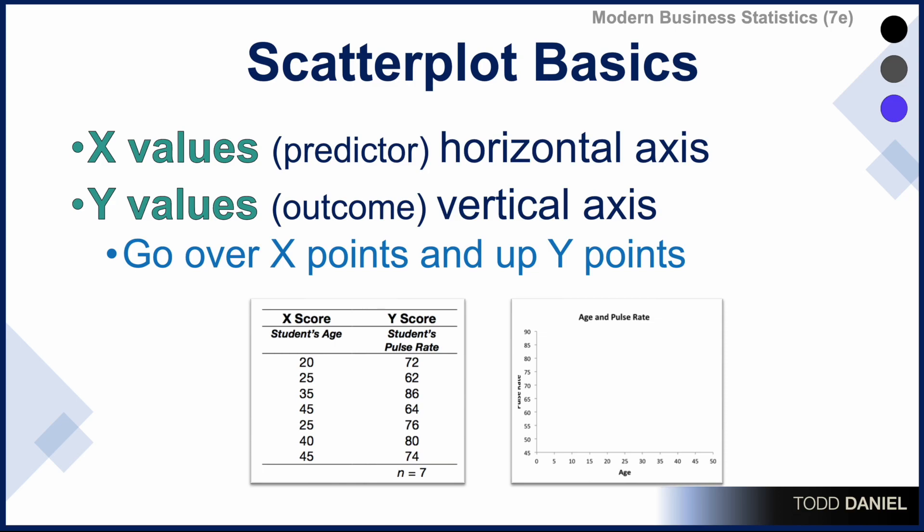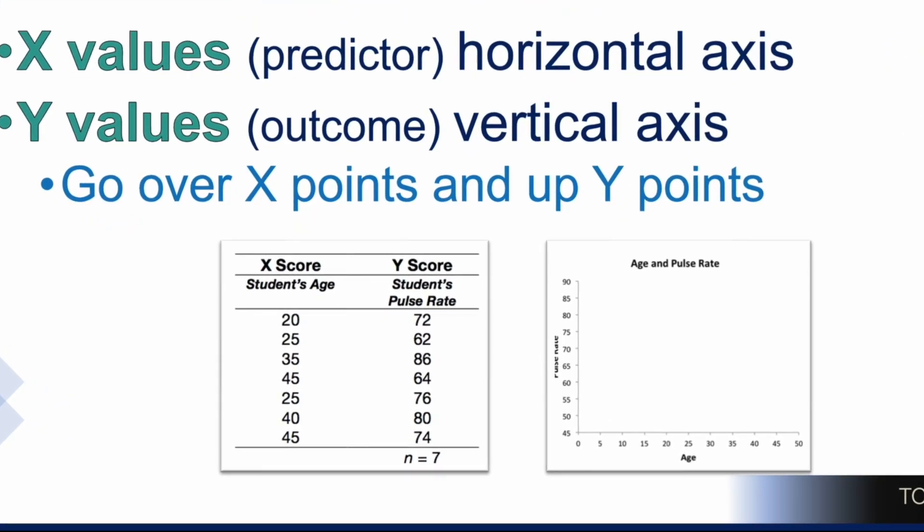I have plotted my age variable across the x-axis and my pulse rate variable up the y-axis. For each student, I would go over x number of points and up y number of points.